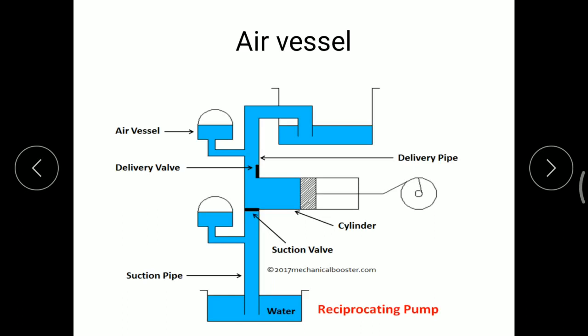We will discuss the first point, which is construction. An air vessel is a cast iron, banded, or fabricated steel chamber which contains compressed air at the top portion and water at the bottom portion of the chamber. As you can see, the void portion is represented by compressed air. It has an opening at the base through which water can flow. The air vessel is fitted either on the suction pipe near the suction valve, or on the delivery pipe near the delivery valve, or on both sides. It is always placed near to the cylinder.